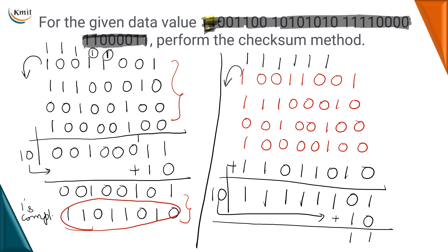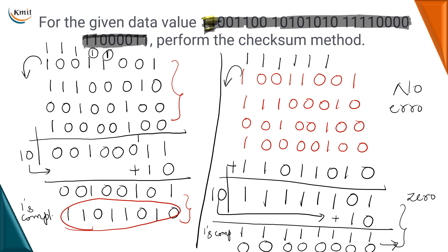After adding all the words including the checksum using one's complement addition and complementing the sum, we get all zeros — 00000000. If the resultant checksum at the receiver side is zero, it means no error has occurred. If any data bits had been modified, the newly computed checksum would be non-zero, indicating an error. This is the checksum technique used for error detection. I leave it for you to exercise by modifying the bits at the receiver side and verifying that you get a non-zero value.